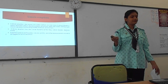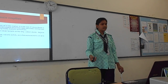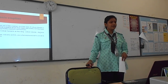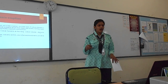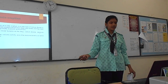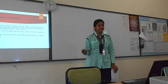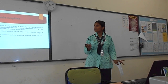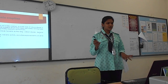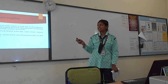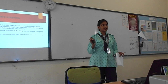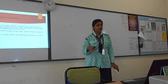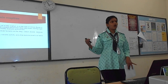The next is a limnic eruption. A limnic eruption, also known as a lake overturn, is a rare type of natural disaster. It involves carbon dioxide dissolved in deep lake water that suddenly erupts, forming a gas cloud capable of suffocating wildlife, livestock, and humans. A limnic eruption can also cause tsunamis, as the rising carbon dioxide causes large waves. Essentially, a limnic eruption is all about carbon dioxide gas erupting from deep lake water, causing tsunamis and more natural disasters.